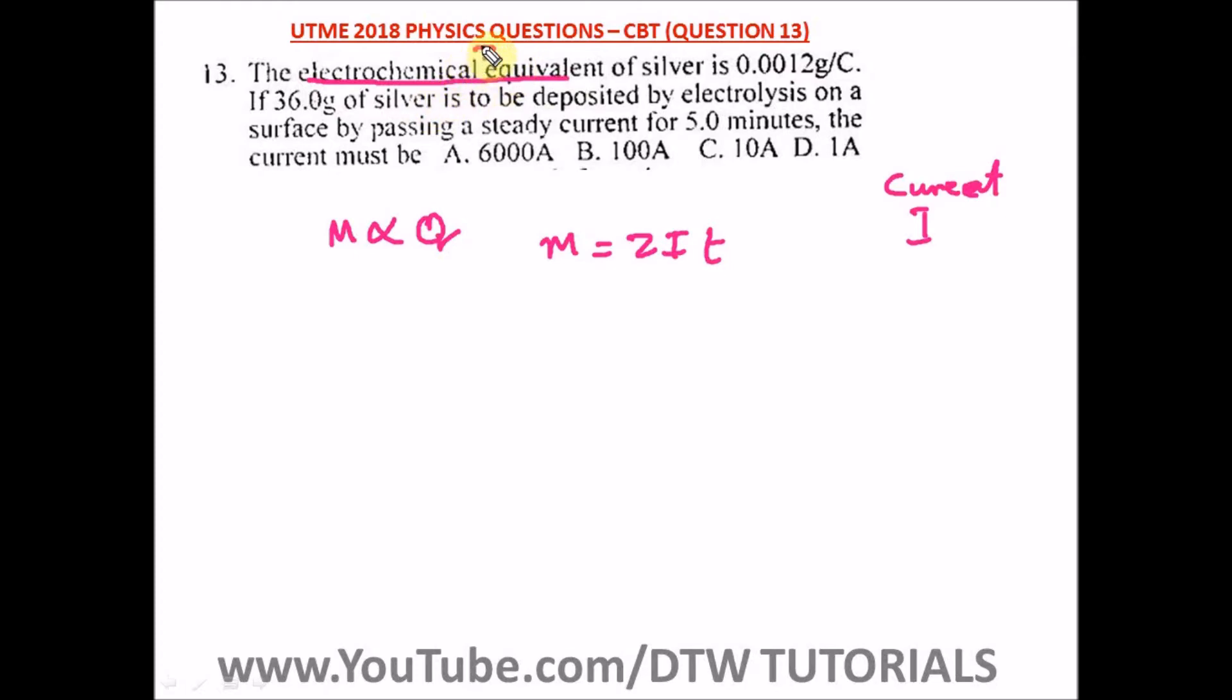And don't forget that Q equals it, and z is the constant which we introduce to change this variation sign to an equal to sign. That's why m equals zit. So here we are looking for our I, so let's make I the subject of formula.